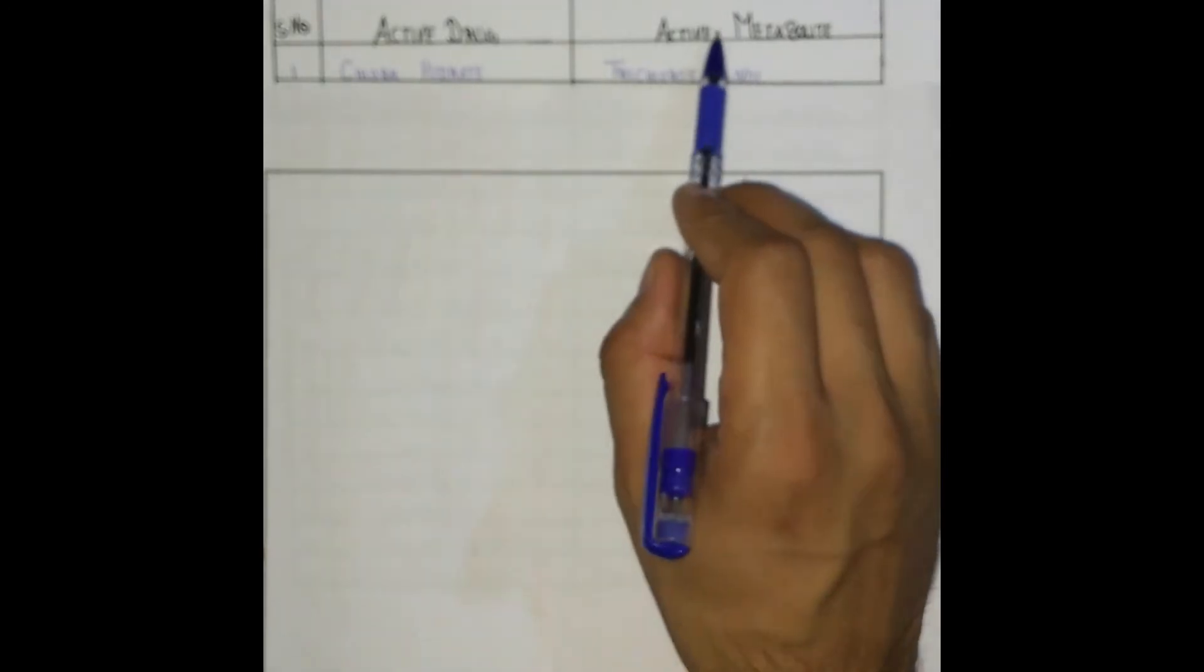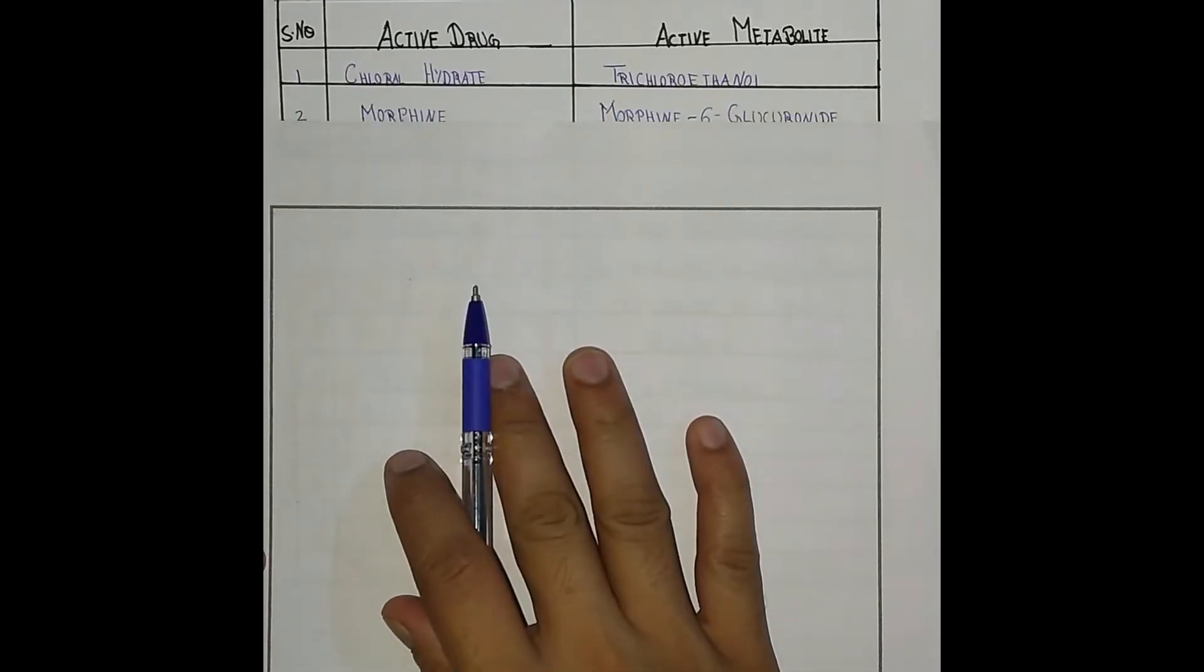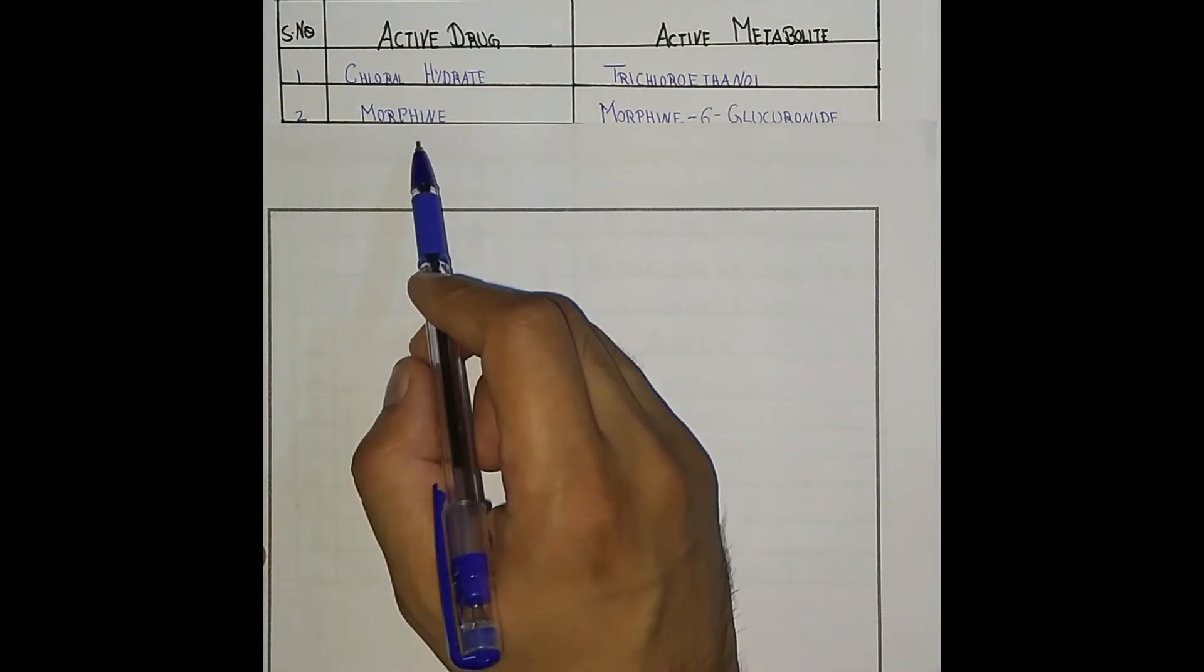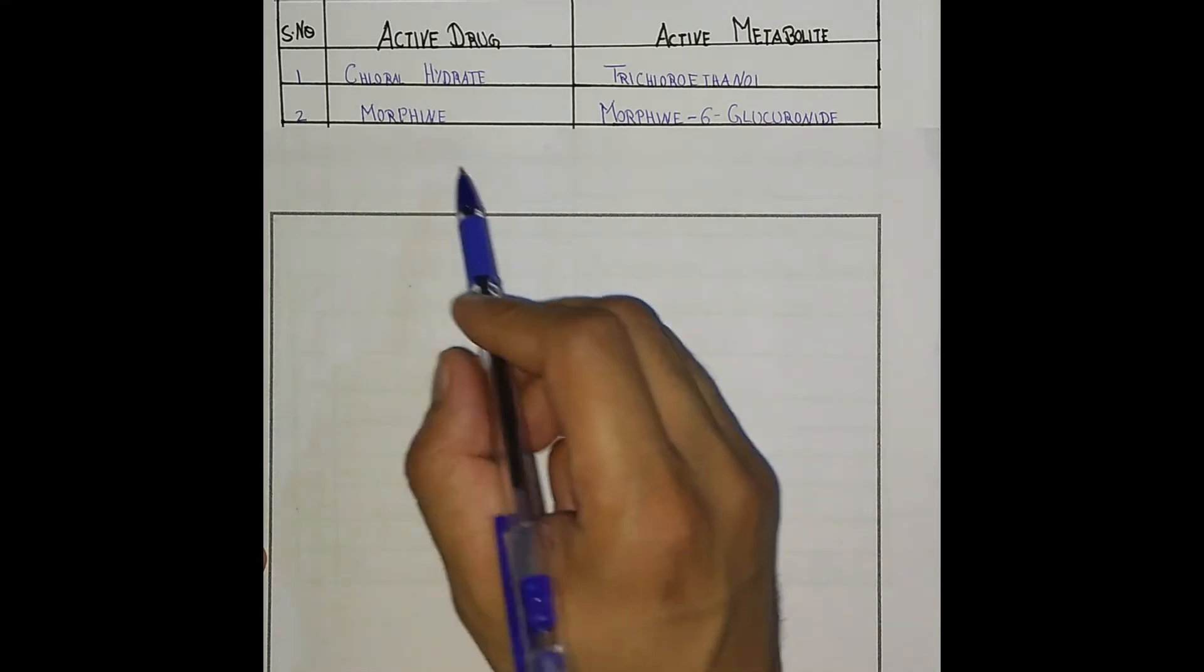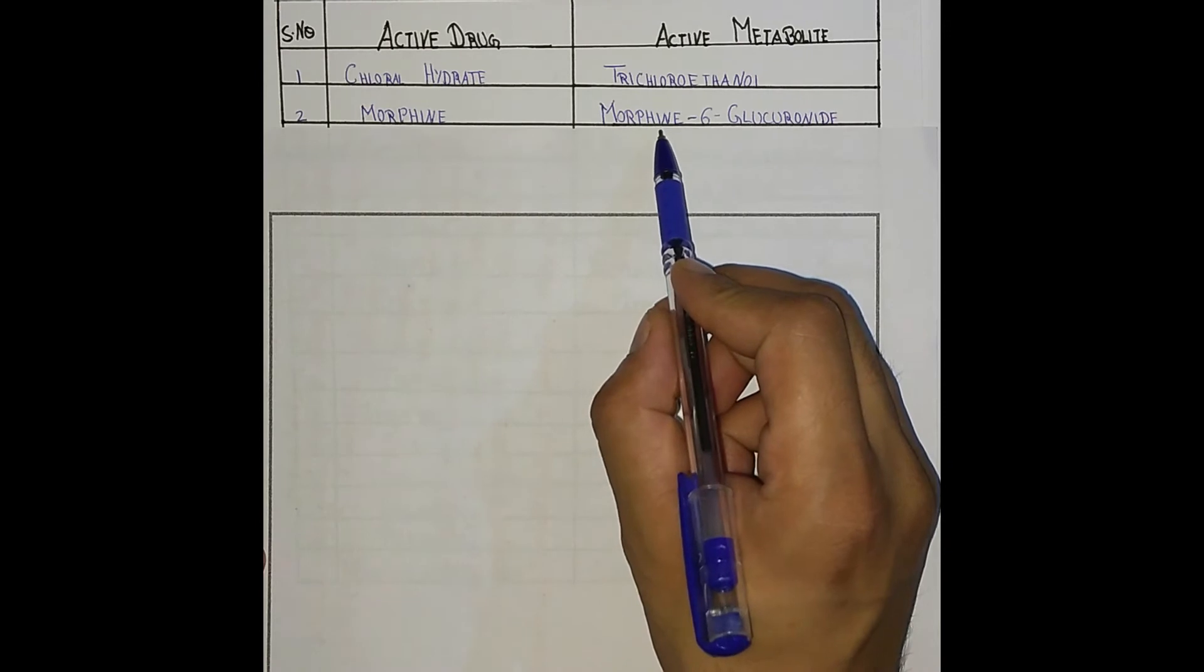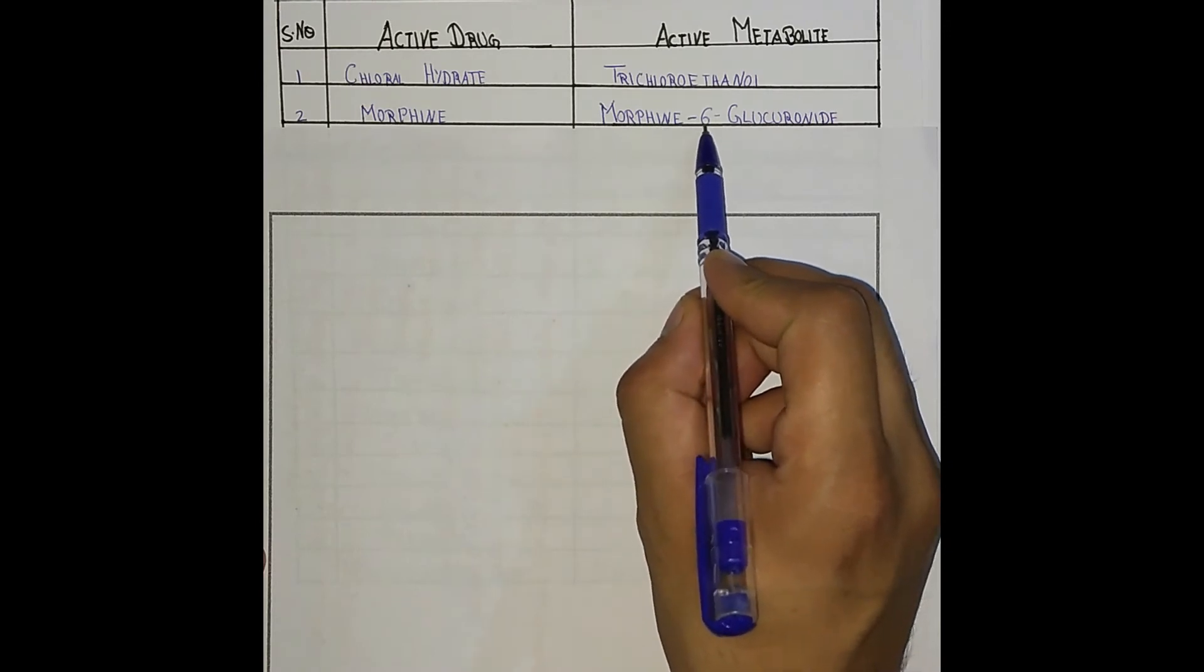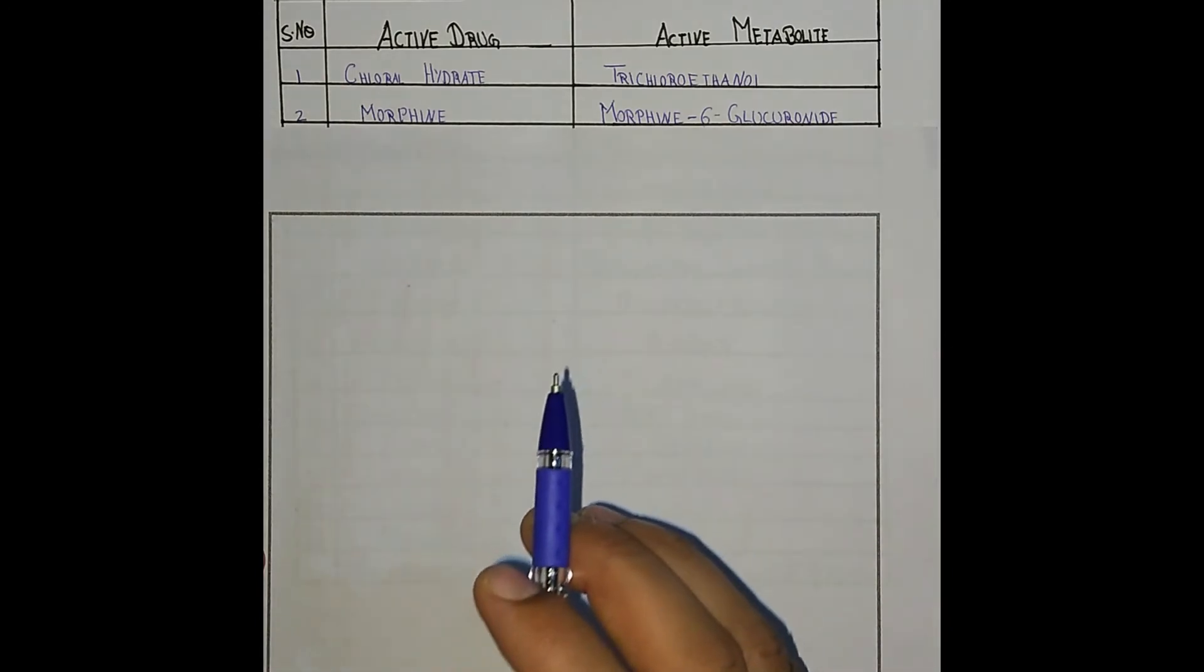Next one is morphine. What is the active metabolite of morphine? Morphine has an active metabolite that is morphine-6-glucuronide. Students, I request you, please write it in your notebook because these tables are very important.